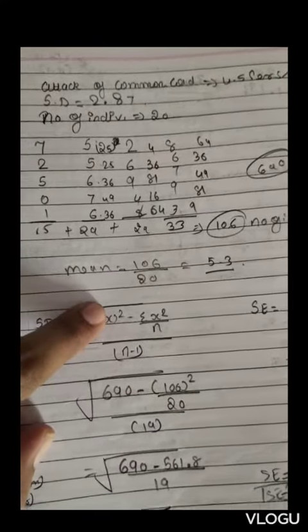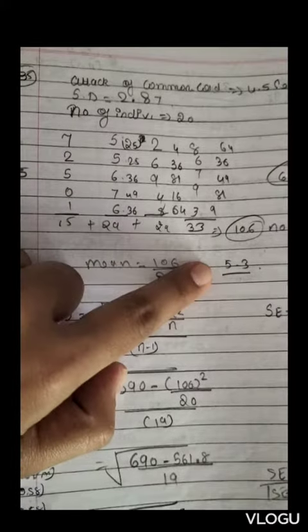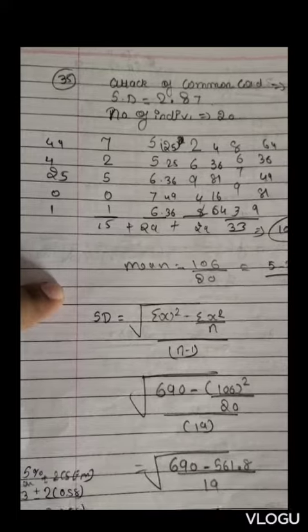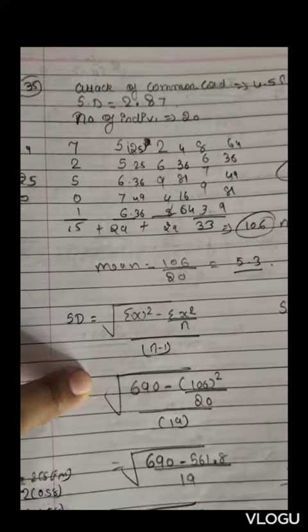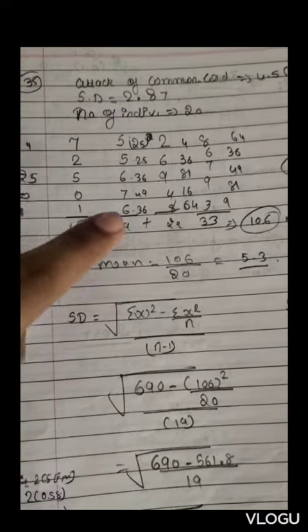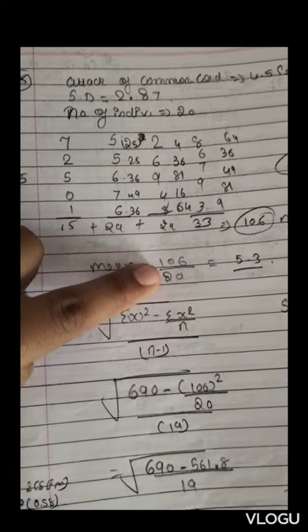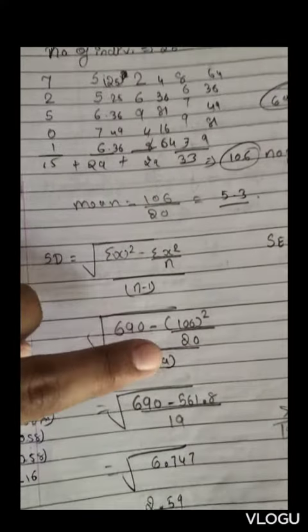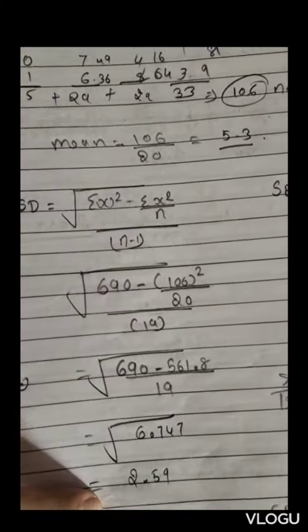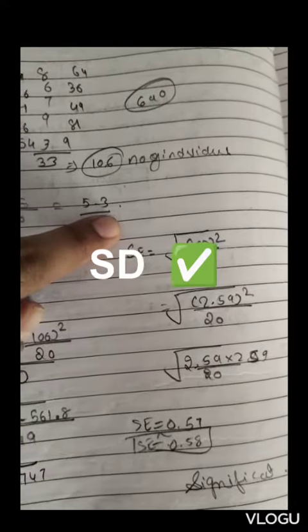My sigma x squared is 690. The sum of all observations is 106, which we square. We get our answer of 2.59 for standard deviation.